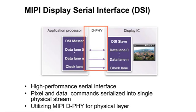MIPI D-PHY is used as the physical layer with up to four data lanes plus a common differential clock lane at speeds up to one gigabit per second per lane. Pixel data and commands are serialized into a single physical stream, and status can be read back from the display. The protocol supports both video mode and command mode for displays, which are commonly found in mobile electronics.